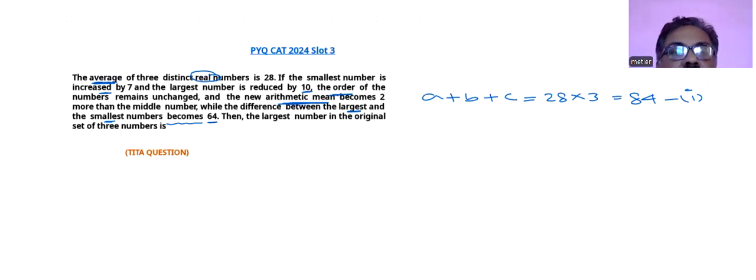Now second relation: the first number, the smallest one, increased by 7 is a plus 7, b remains as it is, c reduced by 10. Now the new average becomes two more than the middle number. The middle number is b, so b plus 2 will be new average. So their sum will be coming as 3b plus 6.